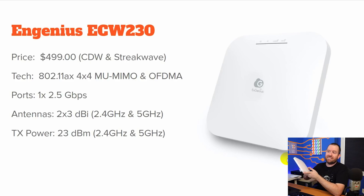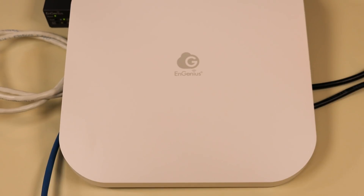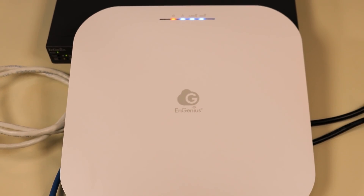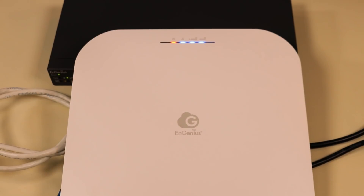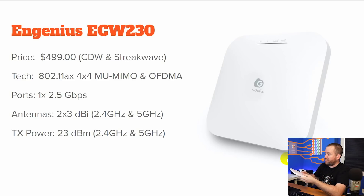Finally, we have the Ingenious ECW230 coming in at a whopping $499 — at least that's the price on CDW as well as Streakwave. This is a Wi-Fi 6 802.11ax 4x4 multi-user MIMO and OFDMA access point. It has one 2.5 gigabit Ethernet port, and it has two 3 dBi antennas in both the 2.4 and 5 GHz bands. The transmit power of this access point is 23 dBm in both 2.4 and 5 GHz.